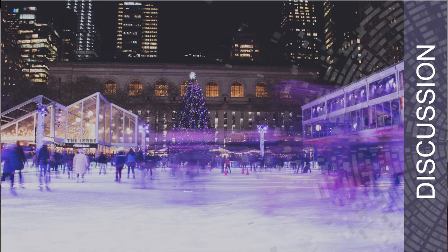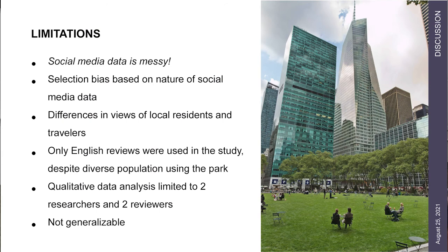There are a lot of limitations to social media data that we have to recognize. It's messy — people make fake accounts, people make accounts that try to bolster their businesses. We also have to consider that it's a certain population. We used TripAdvisor, which happens to skew toward middle-aged people, more women than men. If I combined this with another form of social media data in a larger study, we'd get information from different populations. We also only used English reviews — that's a lens and limitation we have to be transparent about.